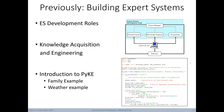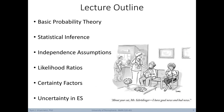In our last lecture, we covered some of the developmental roles for building expert systems. We dove into knowledge acquisition and engineering, and then we learned about the Python shell Pyke for the development of an expert system, and walked through two simple examples of expert systems built with Pyke. Today's lecture is going to cover basic probability theory, the concept of statistical inference, independence assumptions, likelihood ratios, certainty factors, and finally uncertainty in expert systems.